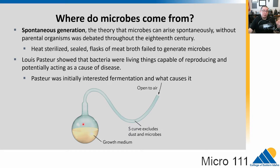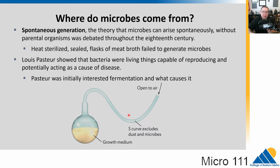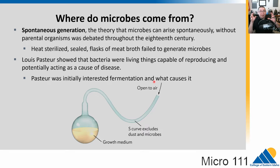So Pasteur devised a swan-neck or S-curve flask. It contains meat broth — the growth medium — which he boiled to sterilize. There's a tube open to the air but with a curve in it, which he hypothesized would catch any microbes that flowed in. He left it out for over a year and nothing grew, until he tilted the flask so the liquid went into the S-curve and sloshed back in — and then things started growing. This showed it's things in the air that cause growth when introduced.